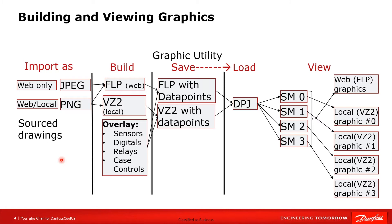This overview shows the whole operation: you have the web drawing, which can be a JPEG or PNG. Once you import it and begin the build process, it becomes an FLP file. You overlay all the data points, do a save, and the save transmits everything to the control. That creates the DPJ file — the FLP and the data points are now combined into a project file and sent down to the control.